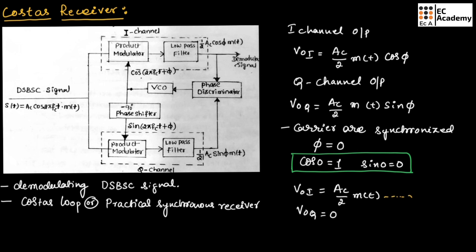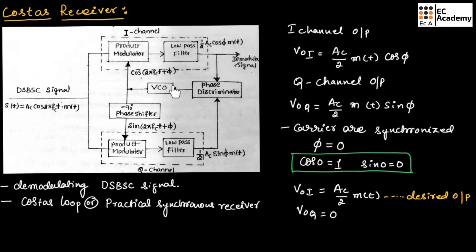The outputs of the I channel and Q channel are combined in the phase discriminator, which produces a DC control signal. This DC control signal is fed to the voltage controlled oscillator and automatically corrects any phase error in the VCO. Therefore, the carriers produced by the VCO are always kept synchronous with the carrier signal used to produce the DSBSC signal.